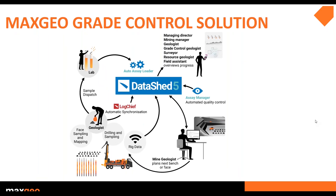In summary, the workflow for the MaxGeo Grade Control system simplifies and generates efficiency. Data is captured in LogGeo. The samples will then be dispatched to the lab and loaded by automatic assay loaders into DataShift. Data can be synchronized directly from LogGeo and the mine data geologists can then view and report the data through DataShift. At MaxGeo we strive to eliminate the data management challenges of data silos, poor integration, inefficient procedures, no analytical tools, and lack of transparency — by creating one data management system that is completely integrated, automated and easy to use. The MaxGeo system makes data available timeously and creates transparency.